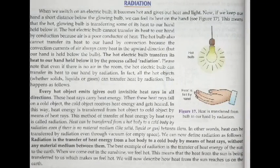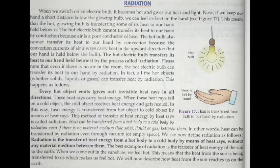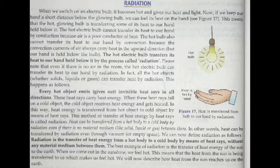Radiation: the hot electric bulb transfers its heat to our hand held below it by a process called Radiation. Every hot object emits heat rays in all directions. These heat rays radiate in the form of rays.